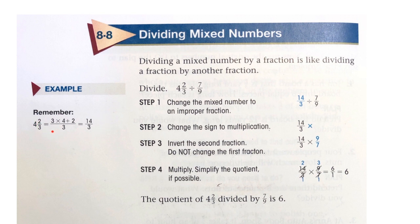Remember, you can multiply the denominator times the whole number plus the numerator. So 3 times 4 plus 2 would be 14, and keep the original denominator, in this case 3. So 4 and 2/3 becomes 14 over 3 divided by 7/9.